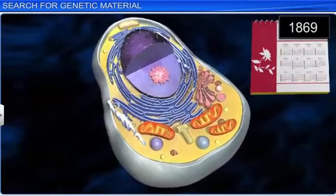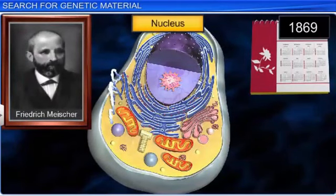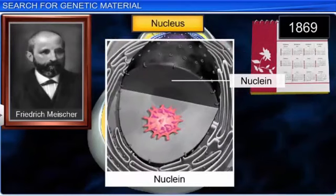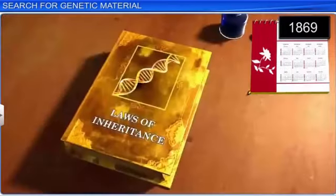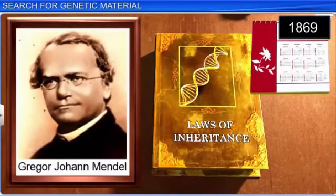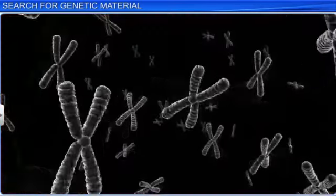In 1869, Friedrich Miescher isolated an acidic material from the nucleus of a cell and called it nuclein, now known as nucleic acids. Also around the same time, Gregor Mendel proposed the principles of inheritance. In fact, Gregor Mendel, Thomas Hunt Morgan, Walter Sutton, and numerous other scientists had narrowed their search for genetic material to chromosomes.